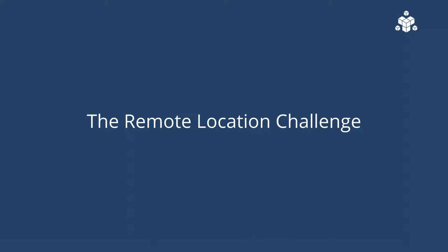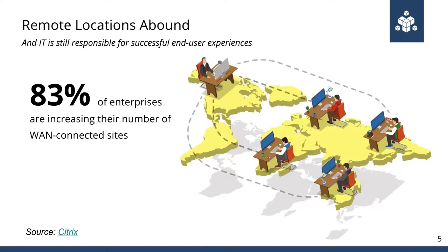We talk about the remote location challenge a lot here at Appneta because it's a problem we see a lot. IT is responsible for the performance of applications and networks at remote locations but lacks proactive, continuous visibility at those same locations. The reason for this lack of visibility has to do with the changing way applications are delivered and the growing trend of the distributed enterprise, which simply means that IT has more locations to support. Organizations of all types are increasing the number of remote locations, and most of these are not going to be connected to your traditional MPLS — they're being connected by a public WAN using technologies like SD-WAN, mainly because of cost and speed of deployment. They're now accessing applications that have moved into the cloud as well as SaaS applications.